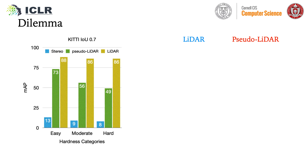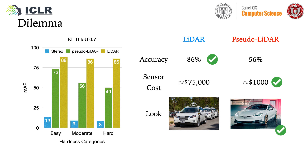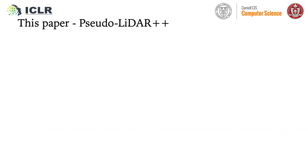However, there is still a bit of accuracy difference between the two, and we will have to make hard trade-offs between them in terms of performance, cost, and look. How can we avoid this? To further close the gap between the two, we propose two methods to advance the stereo-based Sudolidar pipeline.